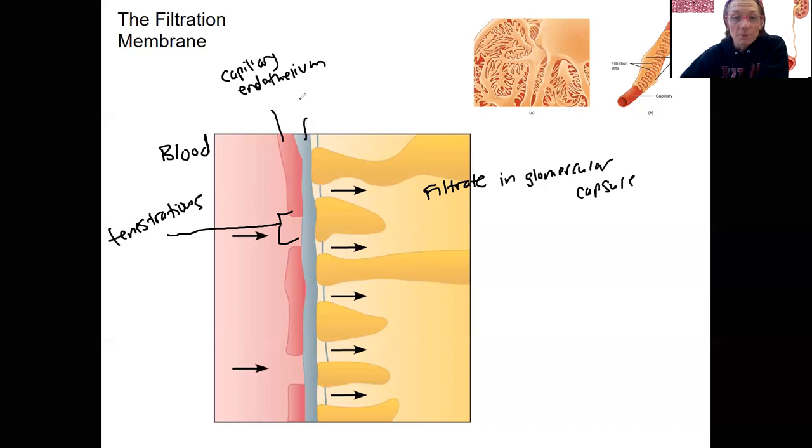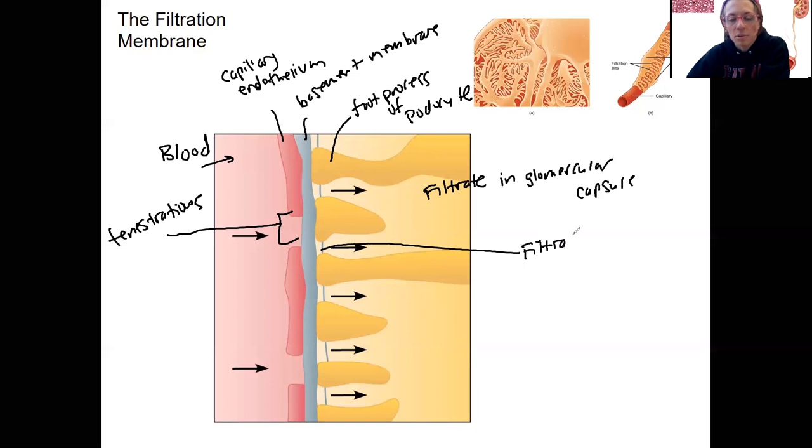We have a basement membrane that connects the endothelium to the glomerular capsule itself. This is the foot process of the podocyte. This here is the capsular space, this is the blood. This is a filtration slit. We've got pores in the capillary endothelium of the glomerulus and filtration slits in between these foot processes.